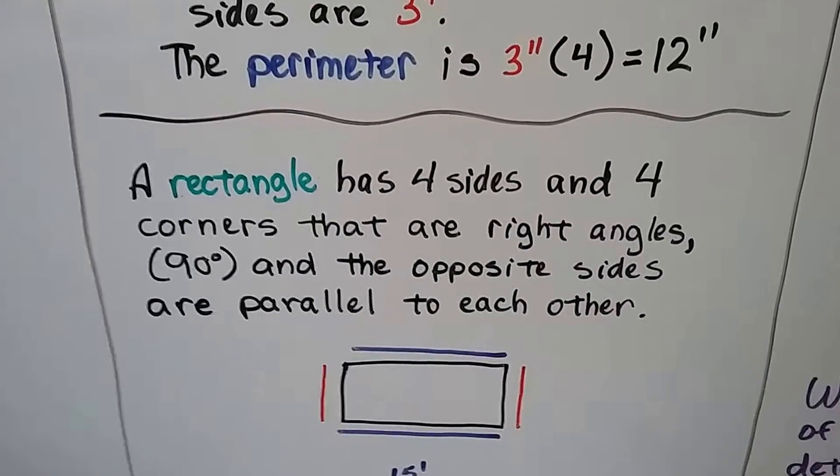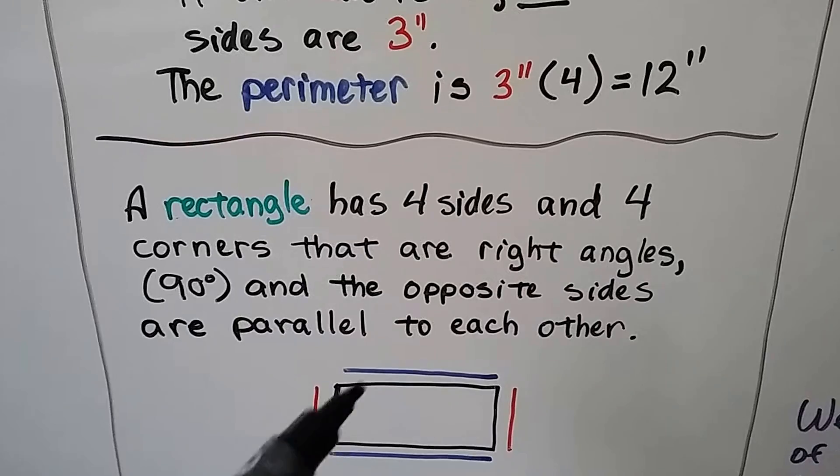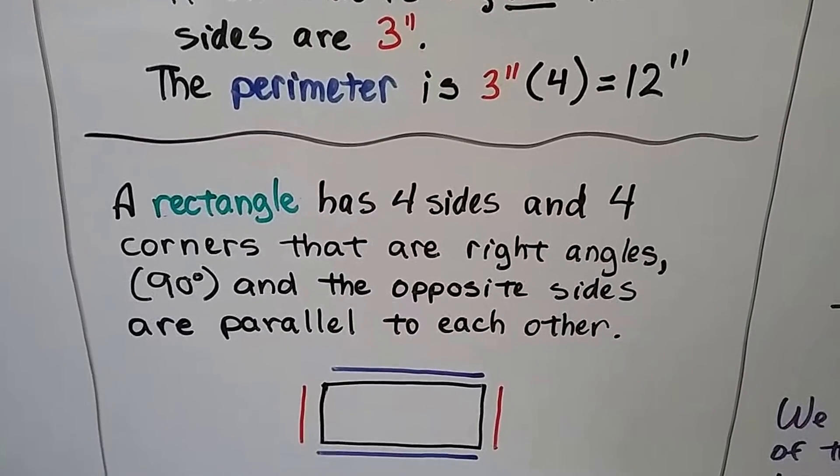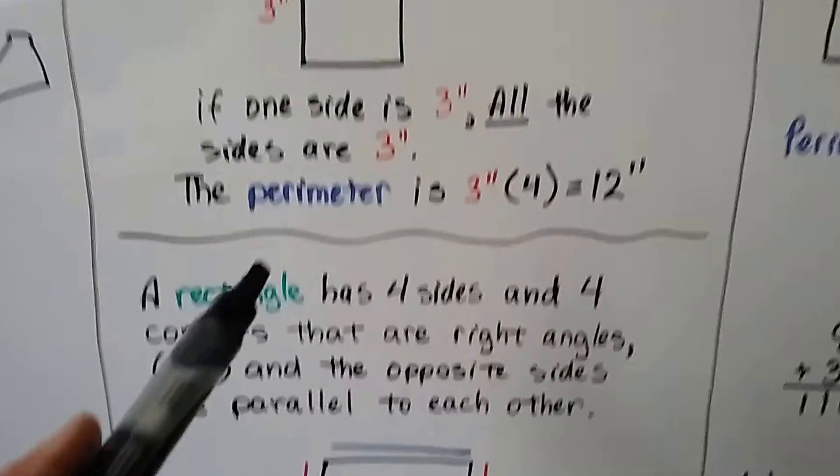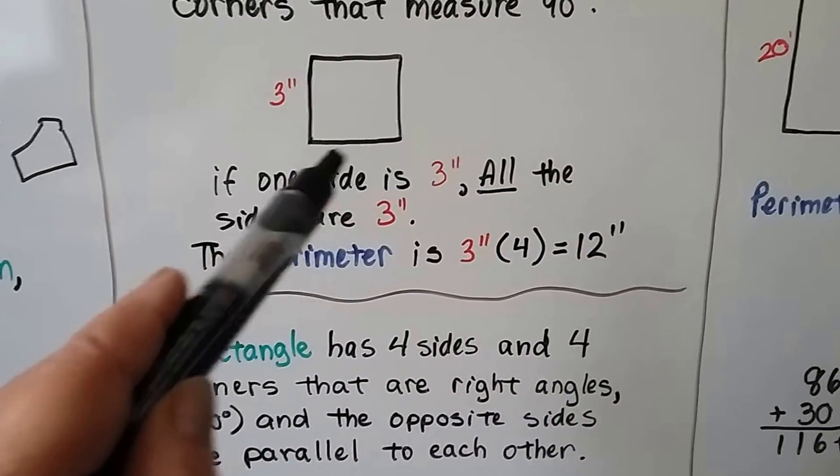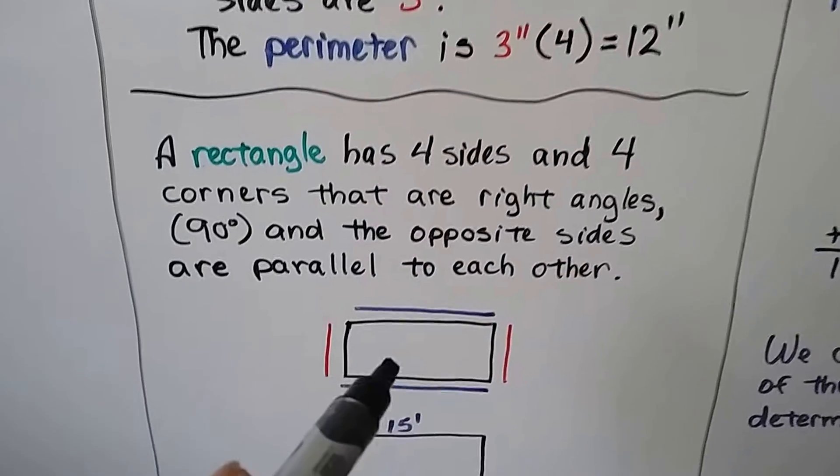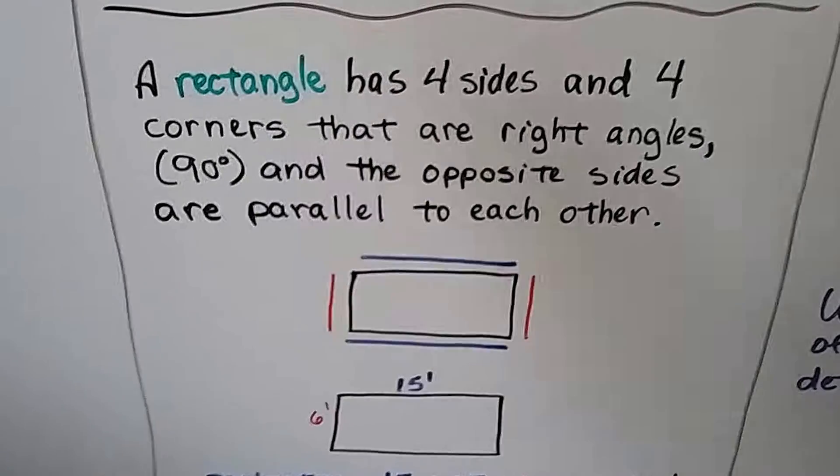A rectangle has four sides and four corners that are right angles. So they have boxy corners also. They're 90 degrees. And the opposite sides are parallel to each other, just like a square. This side is parallel to this side and this side is parallel to this side. Well, same thing with a rectangle except it's got long sides and short sides.